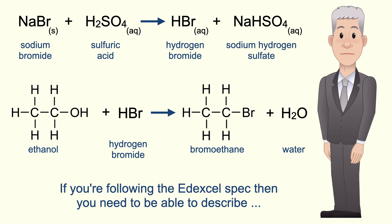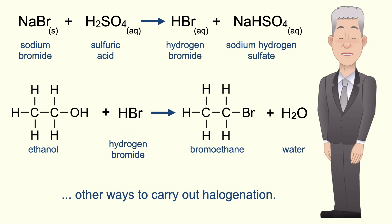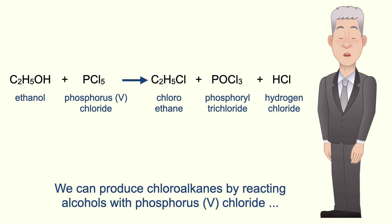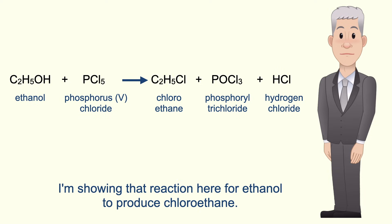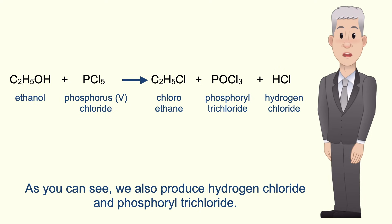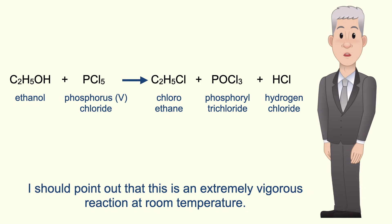If you're following the Edexcel spec you need to be able to describe other ways to carry out halogenation. We can produce chloroalkanes by reacting alcohols with phosphorus(V) chloride, also called phosphorus pentachloride. Shown here for ethanol to produce chloroethane, we also produce hydrogen chloride and phosphoryl trichloride. This is an extremely vigorous reaction at room temperature.